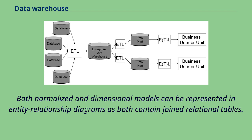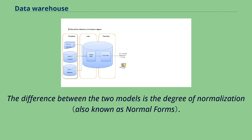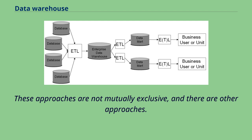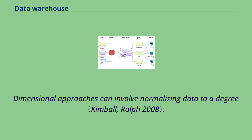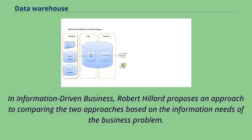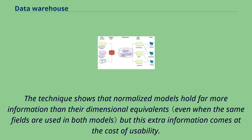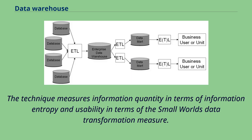Both normalized and dimensional models can be represented in entity relationship diagrams, as both contain joint relational tables. The difference between the two models is the degree of normalization. These approaches are not mutually exclusive, and dimensional approaches can involve normalizing data to a degree. Robert Hillard proposes an approach to comparing the two based on the information needs of the business problem, showing that normalized models hold far more information than their dimensional equivalents but at the cost of usability. The technique measures information quantity in terms of information entropy and usability in terms of the small world's data transformation measure.